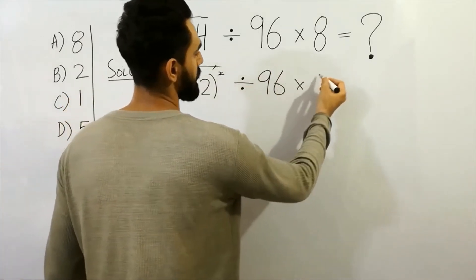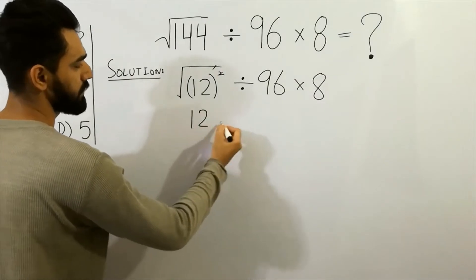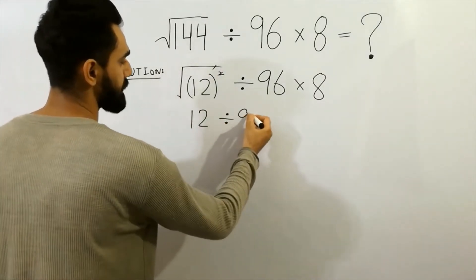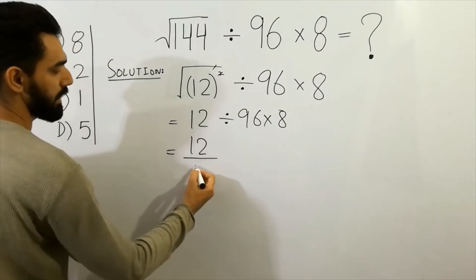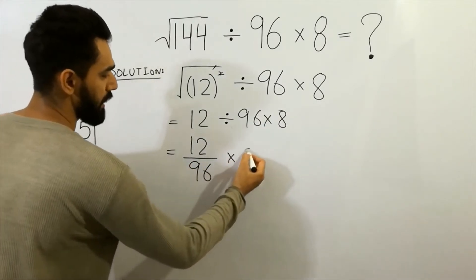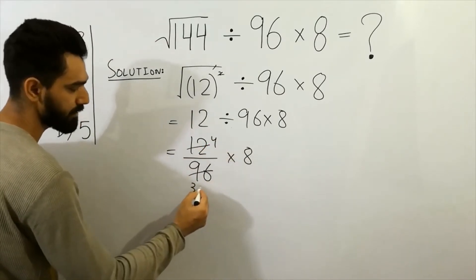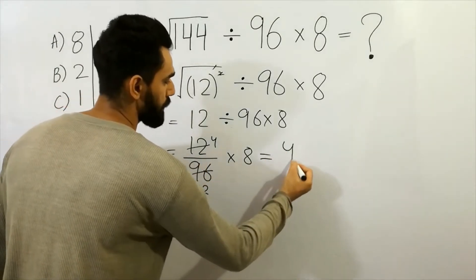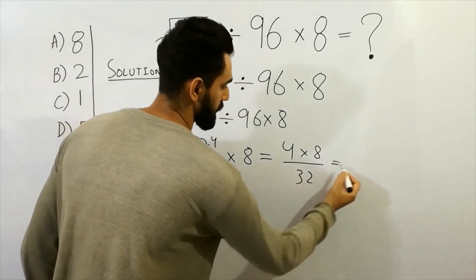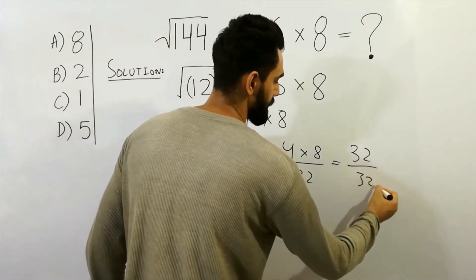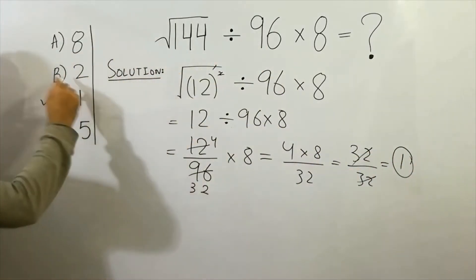Next: ninety-six multiplied by eight. That is the first step. We get twelve divided by ninety-six, multiplied by eight. Simplifying: twelve divided by ninety-six — six sixes are ninety-six, so we get four multiplied by eight divided by thirty-two. Four eights are thirty-two, divided by thirty-two, we get the answer one. So option C is correct.